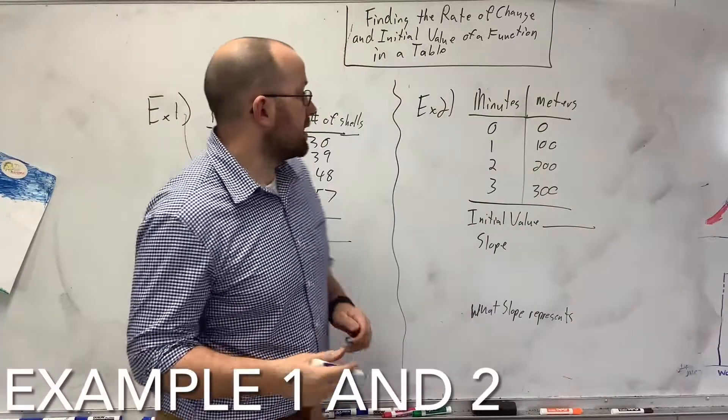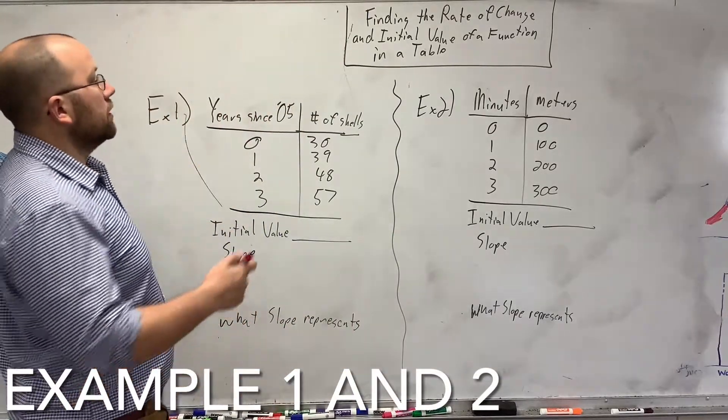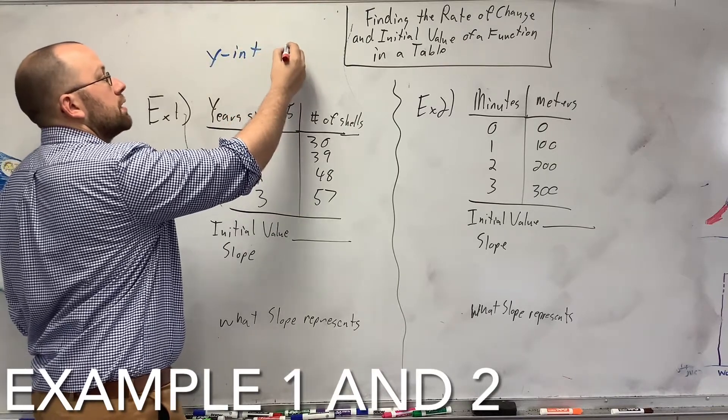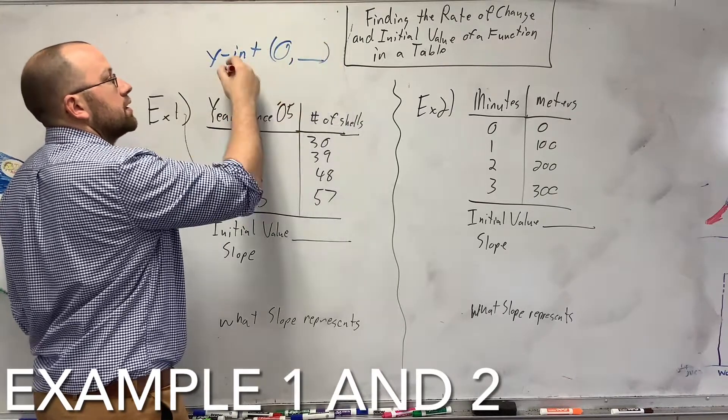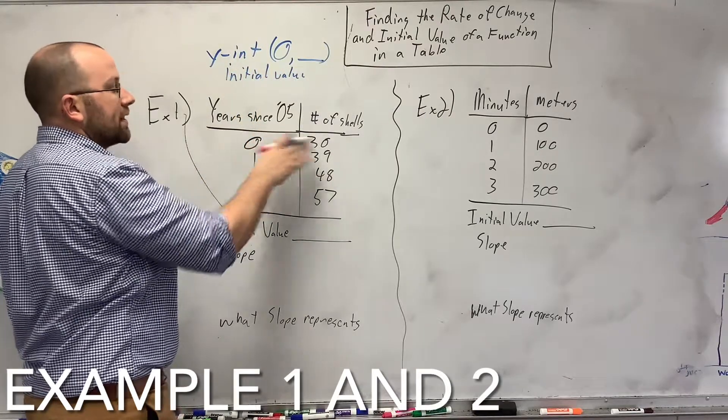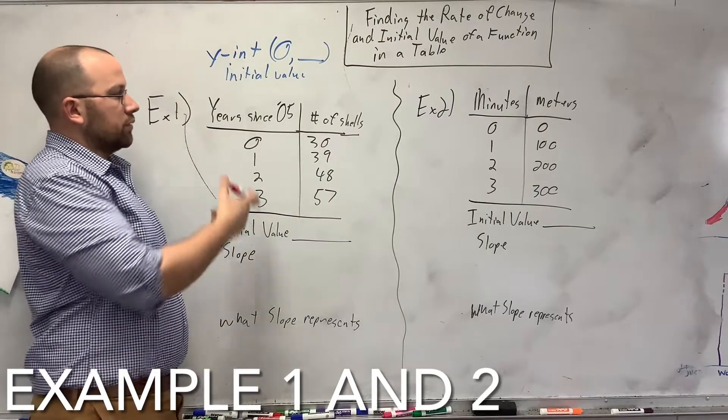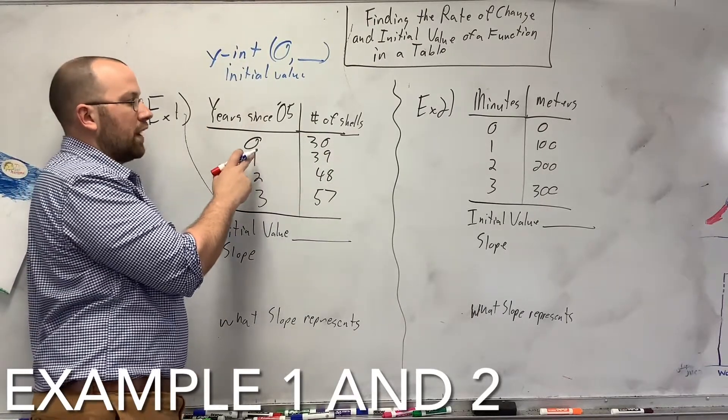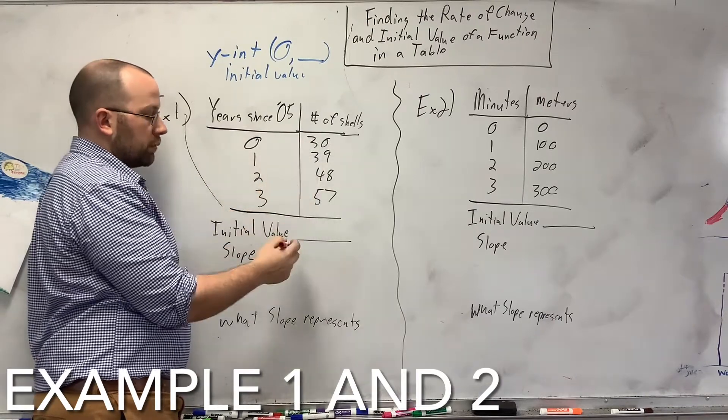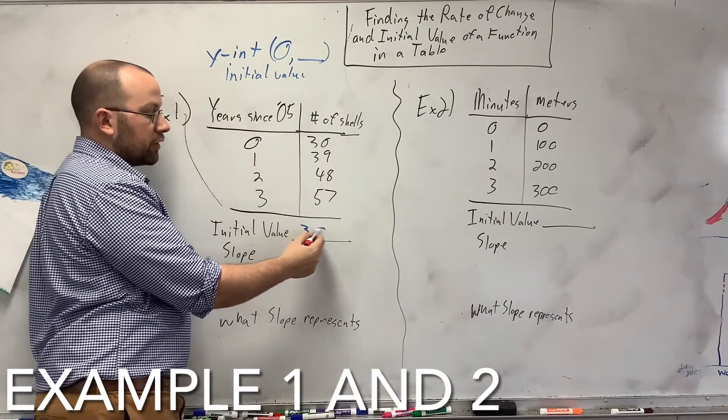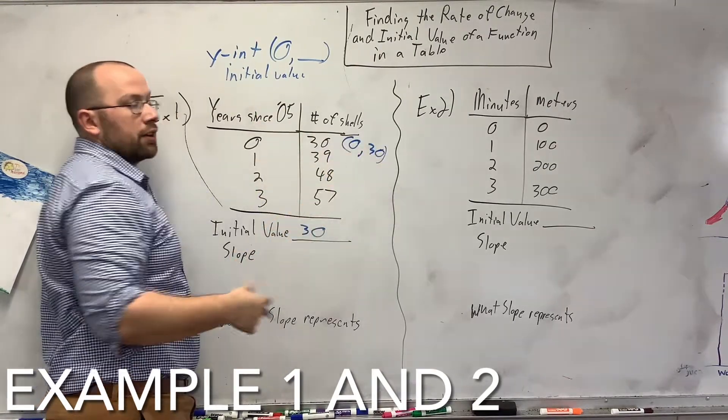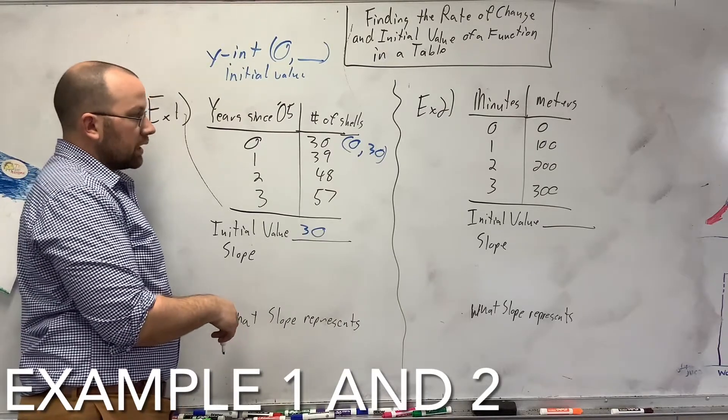Here's two examples from a table. The y-intercept is going to be written something like 0 something, or it's the initial value. It's where you start off. So, in this example, where do you start off? Well, your year sent 0, 0, 5. So, my starting off point is 0, 5. And I started with 30. So, my initial value, I start off with 30. If you want to think of it as a point, this point is 0, 30. Initial value, your y-intercept.